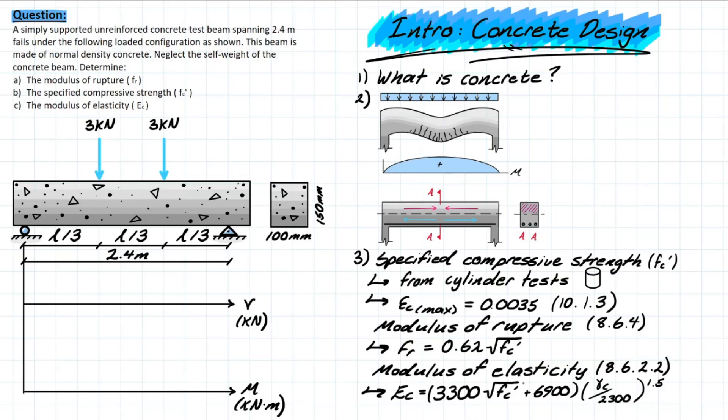This property is useful for calculations related to stiffness and deflection of the concrete member. It's calculated using this formula down here, and here's the code requirement if you wanted to search up in the Canadian code. It's based on, once again, the compressive strength of your material but also the unit weight, which typically ranges between 1500 kilograms per meter cubed to 2500 kilograms per meter cubed, but generally for reinforced concrete you're going to be using 2400 kilograms per meter cubed.